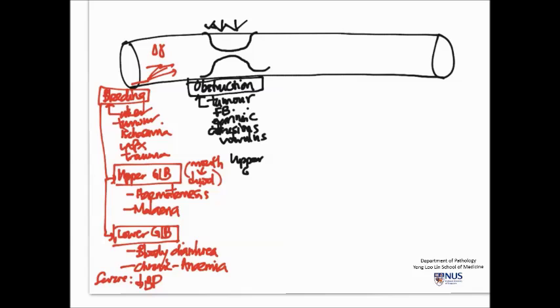Again, the symptoms are different for upper GI obstruction, say in the esophagus or in the stomach, versus lower GI obstruction. The patients may present with early satiety in upper GI obstruction, sometimes dysphagia as well, difficulty swallowing, and they also may experience nausea and vomiting.